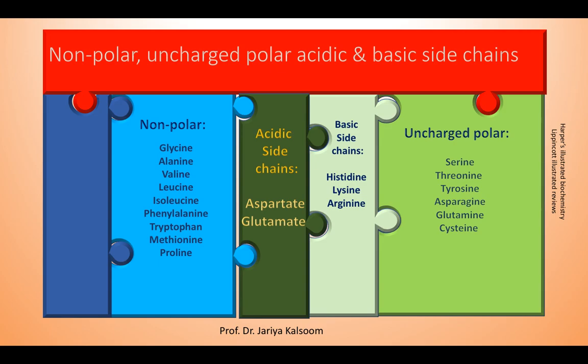Amino acids with non-polar side chains do not gain or lose electrons or participate in hydrogen or ionic bonds. The side chains of these amino acids can be thought of as oily or lipid-like, a property that promotes hydrophobic interactions. Amino acids with uncharged polar side chains have zero net charge at physiologic pH. Aspartic and glutamic acid are proton donors with acidic side chains. The side chains of basic amino acids accept protons, and these include histidine, lysine, and arginine.